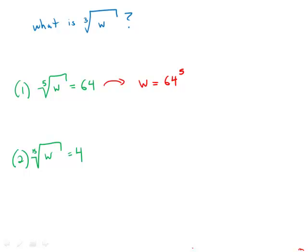Now, of course, because this is data sufficiency, we don't actually need to do the calculation. All we know is that we could, if we had enough time, multiply 64 up five times and find that product.